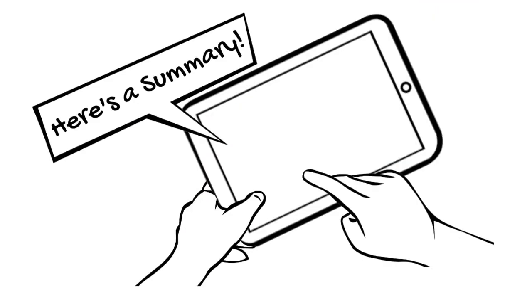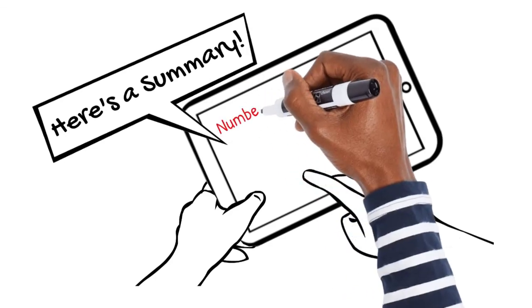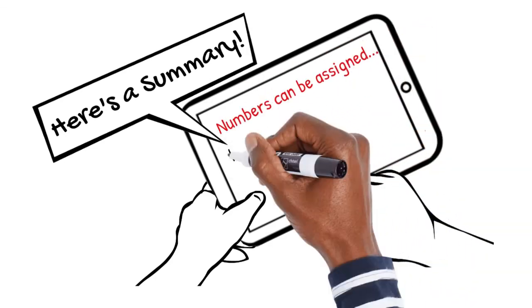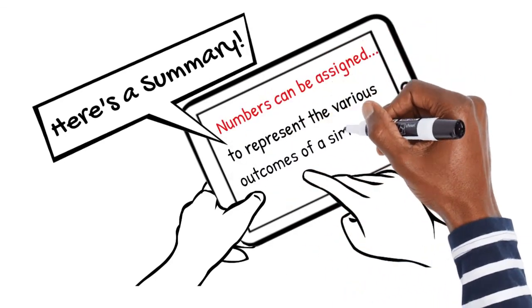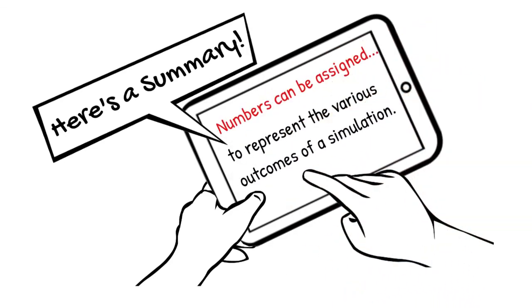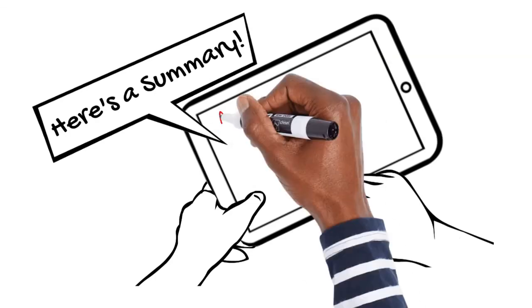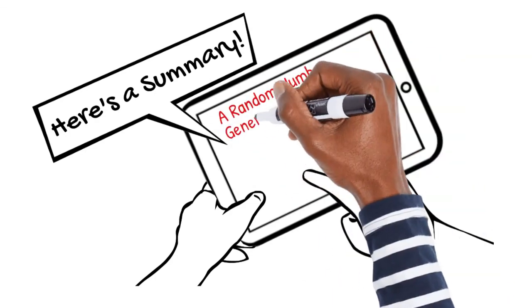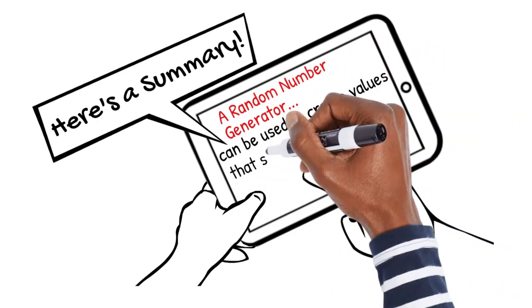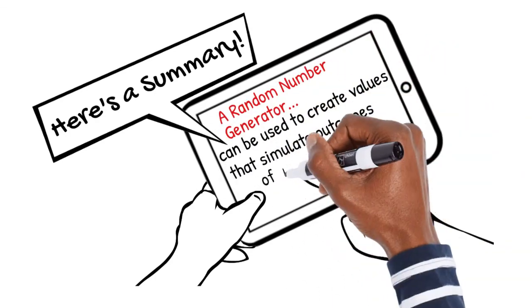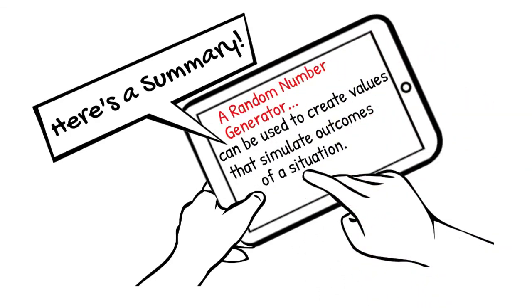Here's a summary of what we've learned. Numbers can be assigned to represent the various outcomes of a simulation. A random number generator can be used to create values that simulate outcomes of a situation.